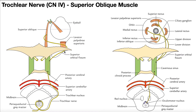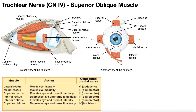As soon as the trochlear nerve moves through the superior orbital fissure and enters the orbit, it's going to come in contact with the levator palpebrae superioris — the muscle that elevates the eyelid. It's going to cross posteriorly, move behind that muscle, and then loop back around medially, where it's then going to innervate the superior oblique muscle. This is the only muscle that is innervated by the trochlear nerve.